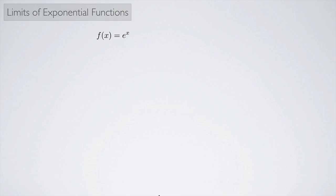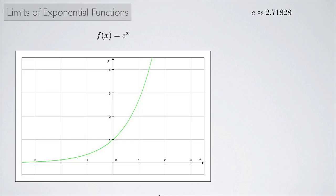We also have the function f of x equals e to the x, which looks like f of x equals a to the x with e instead of a. Recall that e is approximately equal to 2.71828 and keeps going on forever. Since e is larger than 1, the graph passes through 1 on the y-axis, has a horizontal asymptote on the x-axis, and the limit as x approaches infinity is positive infinity, while the limit as x approaches negative infinity of e to the x is 0.